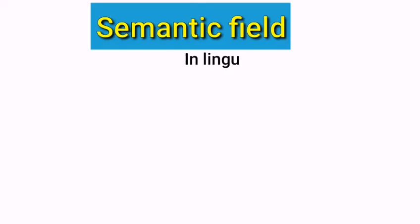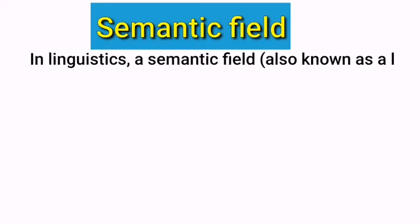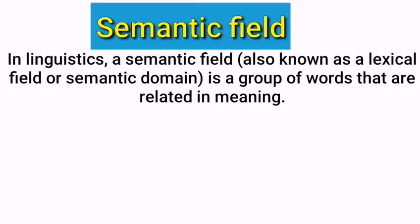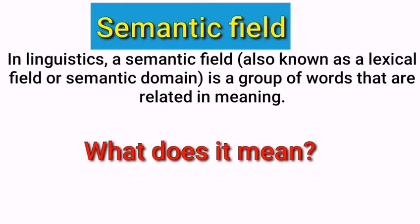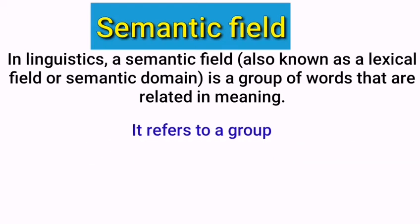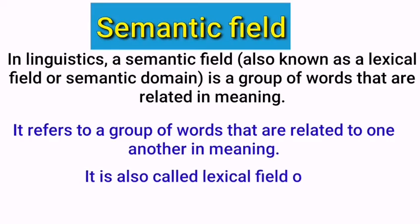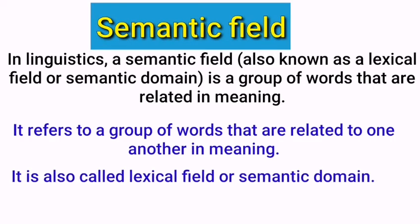It can be defined as follows. In linguistics, a semantic field, also known as a lexical field or semantic domain, is a group of words that are related in meaning. Simply, it means that in linguistics, a semantic field refers to a group of words that are related to one another in meaning. It is also called a lexical field or semantic domain.